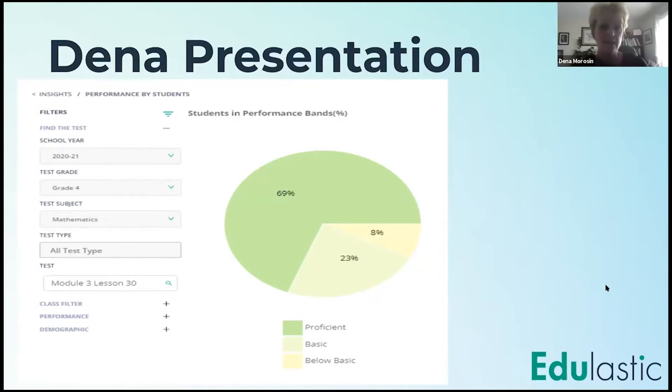So our fourth grade team, there's three teachers in our fourth grade team. We all share, we're all co-teachers in each other's Edulastic classes. So we can share data. And again, all that great data that they were showing when you share classes with your co-teacher, then you can see it across the grade level, which we're doing our RTI across grade levels.